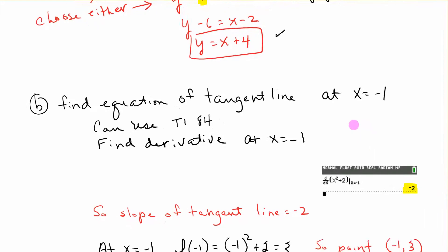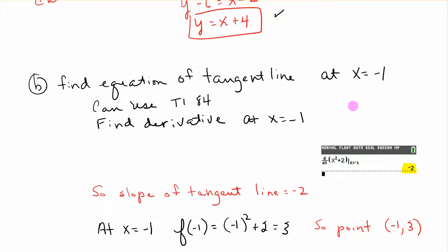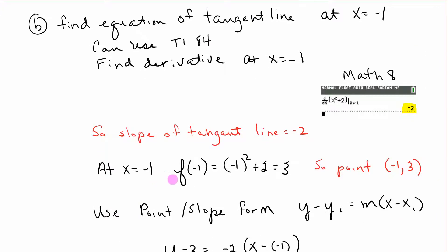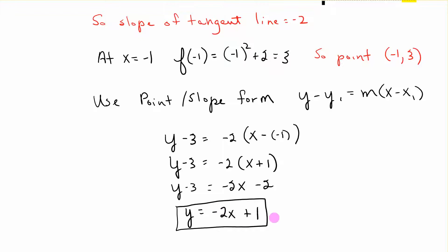If we're asked to find the equation of the tangent line at x = -1, we can use our TI-84 to find the derivative at x = -1. In this calculator, we did math 8. We plug in the parts we know, the equation at x = -1, and we get -2. So the slope of the tangent line is -2. At x = -1, y is 3, so (-1, 3) is our point. We use the formula, plug it in, and get the equation of the tangent line.